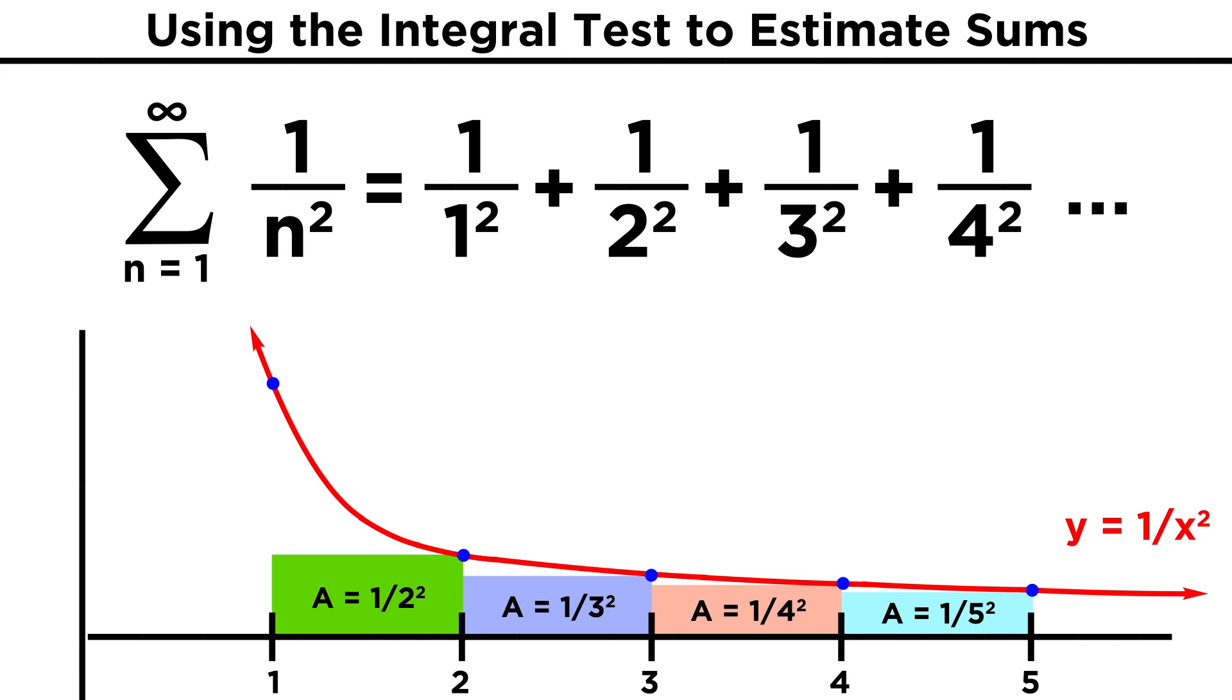The area of each rectangle is equal to one of the terms in the series, because this rectangle has an area of one over two squared, and the second term in the series is one over two squared. This rectangle has an area of one over three squared, and the third term in the series is one over three squared. So every rectangle all the way to infinity has a corresponding term in the series, and we are leaving out only the first term, one.